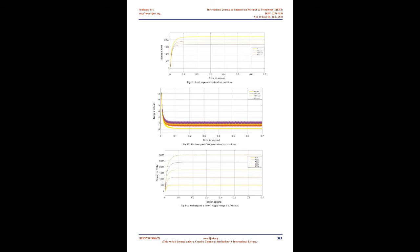Fig. 8 shows speed characteristics of BLDC motor applying 1.5 Nm load. Fig. 9 shows electromagnetic torque characteristics of BLDC motor applying 1.5 Nm load. Fig. 10 shows speed characteristics of BLDC motor applying 2.5 Nm load. Fig. 11 shows electromagnetic torque characteristics of BLDC motor applying 2.5 Nm load. Fig. 12 shows speed response at various load conditions. Fig. 13 shows electromagnetic torque at various load conditions.